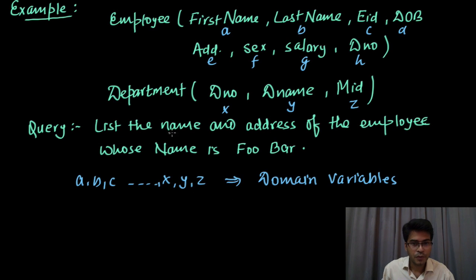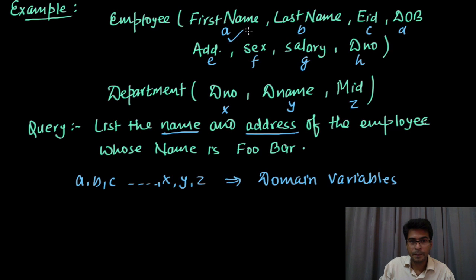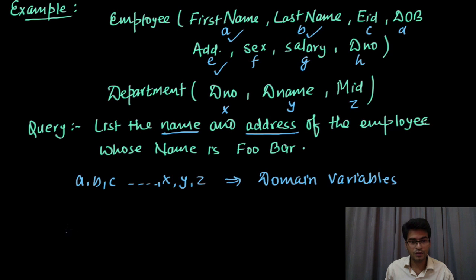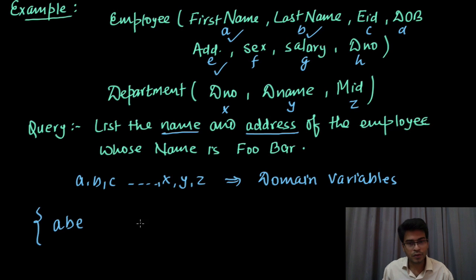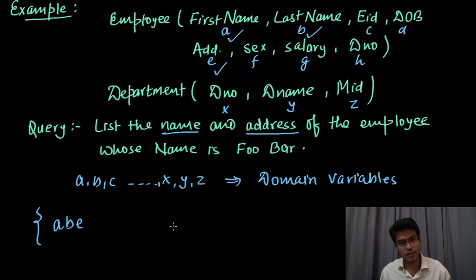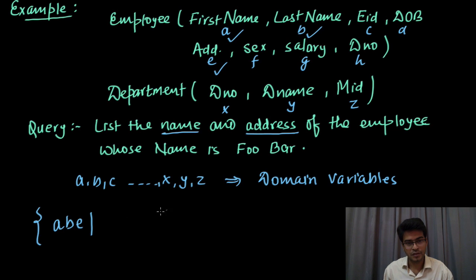Now the query requires us to output name and address. Since it says name we have to take both first name and last name. So the output will be first name, last name, and address. The corresponding domain variables are a, b, and e. We write { a, b, e | ... }, which is similar to tuple relational calculus where we used to write t dot attribute name. Here since we have assigned each attribute an individual domain variable, we just write the name of the domain variables.